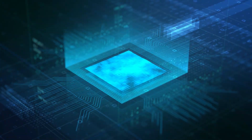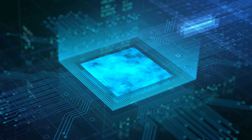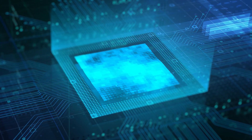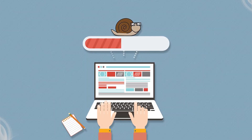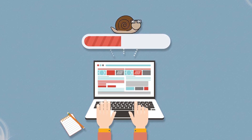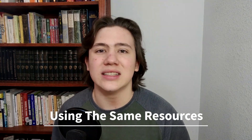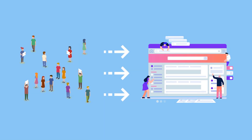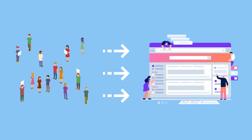Think of it this way: you've got one computer and each and every website is using the same processing power from that computer. They're basically stuck and anchored to that one server. So let's say one website has a particularly busy day where it gets a lot of views and a lot of clicks and a lot of traffic. Because of that, all the other websites may be a bit slower during that time period, since they're all using the same resources.